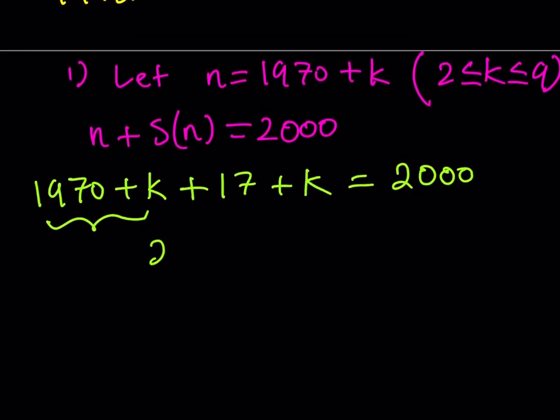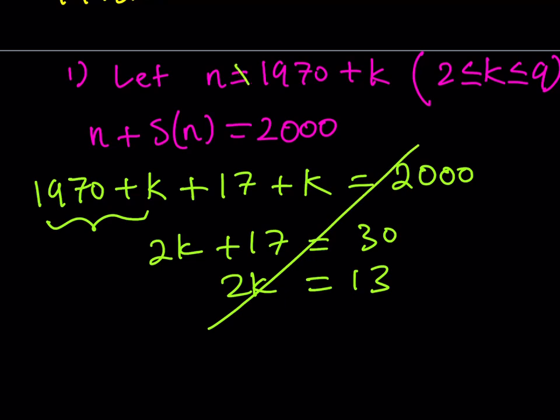Great. So from here, we get 2k plus 17 is equal to 2000 minus 1970, which is 30, and this gives us 2k is equal to 13. But, unfortunately, this does not give us an integer value for k, because k needs to be an integer because n is an integer. So this solution is basically rejected.